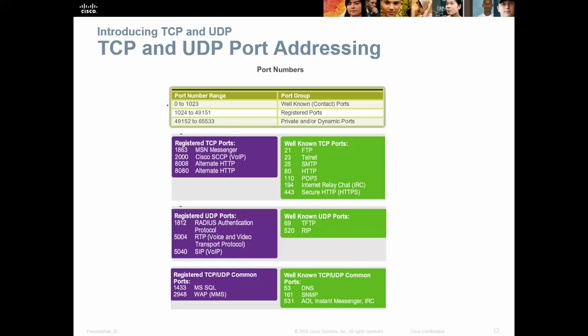The well-known ports are 0 to 1023, registered ports are 1024 to 49,151, and then there are private and dynamic ports. You can look these up on Wikipedia or via IANA, and TechNet also has a full list. Common ones include: FTP is 21, SMTP is 25, HTTP is 80, POP3 is 110, secure HTTPS is 443, RIP is 520, and DNS is 53. If you've set up Xbox Live and needed to open ports on your router, there are typically four ports to open up specifying whether TCP or UDP is required.